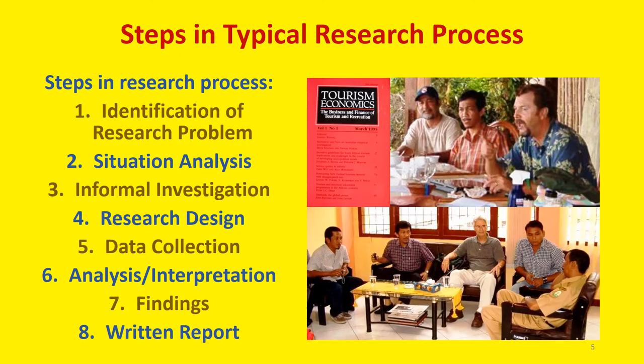Once a problem exists that needs formal research, a series of steps must be completed to study it properly and present the results. The following steps are typically used in the research process: Number one, identification of the research problem — what is being studied. Two, situation analysis — which is relevant background information. Three, informal investigation — which is enhancing the researcher's knowledge and creating possible hypotheses.